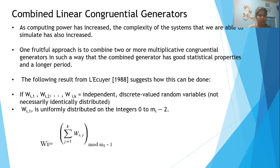One among them, W_i,1, can be uniformly distributed on the integers from 0 to m_i minus 2, where m is the modulus value.